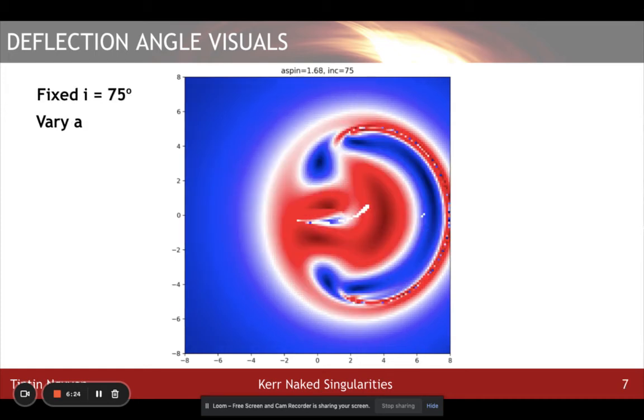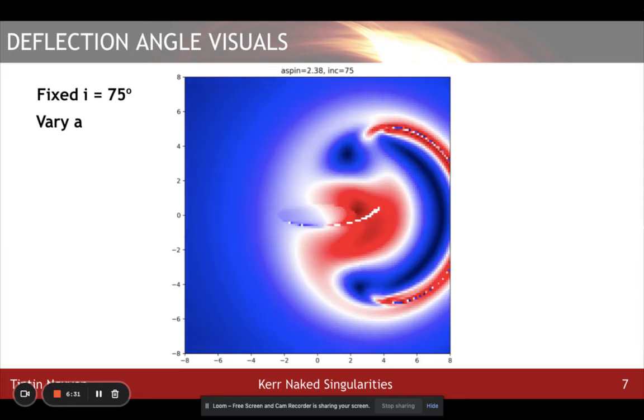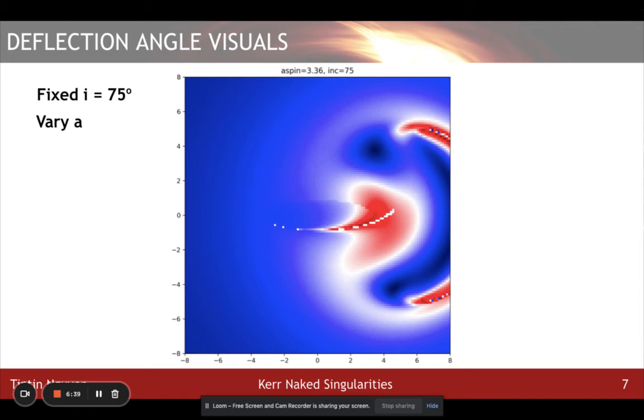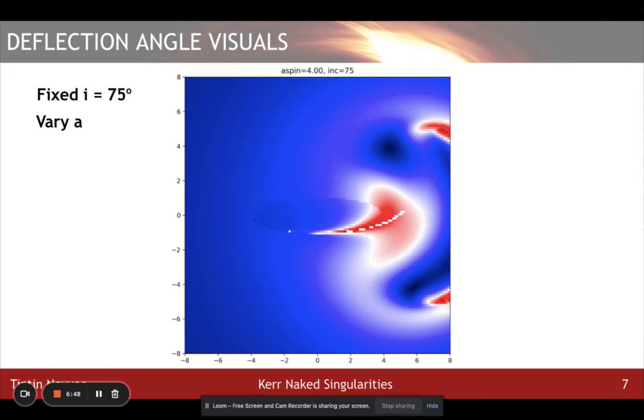Now, I will keep the inclination angle fixed at 75 degrees and increase spin A. For larger spin, the projection of the ring singularity becomes clear as you look at the center of this visualization. Also, the apparent shape shifts rightward as spin increases. The mirror and lens structure appears to shift continuously as well.